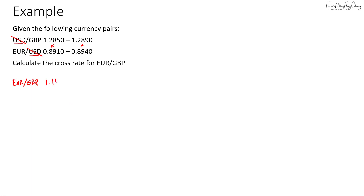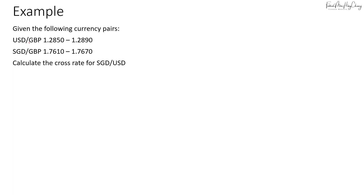So if I take 1.285 × 0.891 I get 1.1449, and for the ask, 1.289 × 0.894 gives 1.1524. That's the cross rate for euro to pound. Now let's look at another example where the common currency is on the same side.